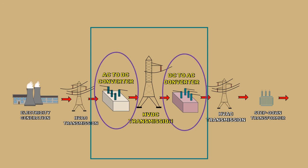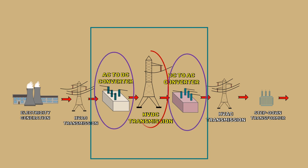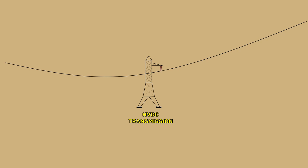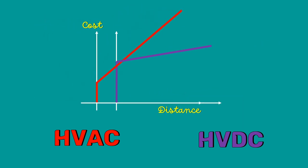However, the cost of the terminal equipment of HVDC is very high — these semiconductor converters are very expensive. The overall cost of transmission depends on both the terminal equipment cost and the transmission line cost. The terminal equipment cost is fixed, but the transmission line cost increases with distance. On a cost-versus-distance graph, the terminal equipment cost of HVDC is higher than HVAC, while the transmission line cost of HVDC is lower than HVAC.